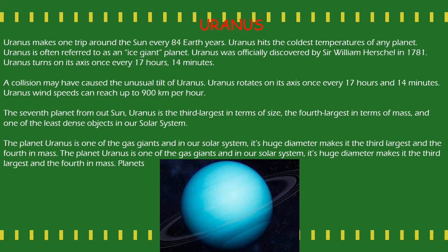Uranus makes one trip around the Sun every 84 Earth years. Uranus reaches the coldest temperatures of any planet and is often referred to as an ice giant. Uranus was officially discovered by Sir William Herschel in 1781. Uranus turns on its axis once every 17 hours and 14 minutes. Uranus's wind speed can reach up to 900 km per hour. It is the seventh planet from the Sun, the third largest by size, the fourth largest by mass, and one of the least dense objects in our solar system.